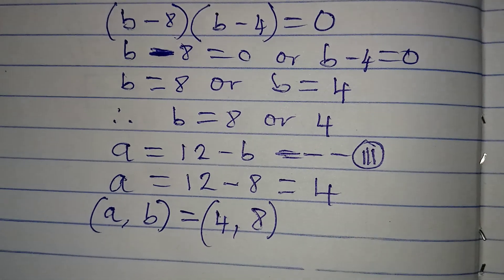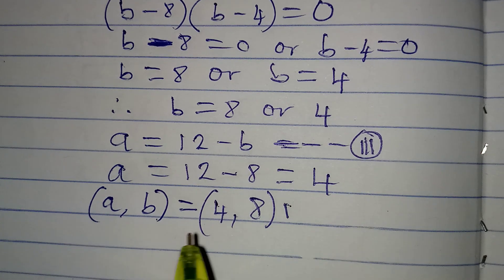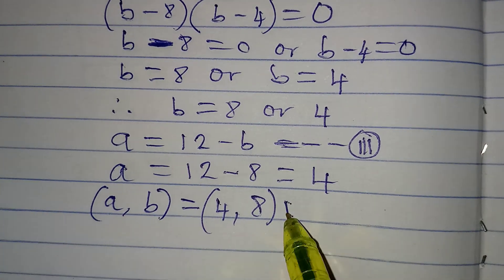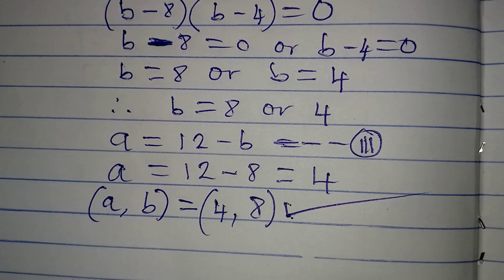So these are two pairs of values that will satisfy the given equation. Now, we can also have another pair.